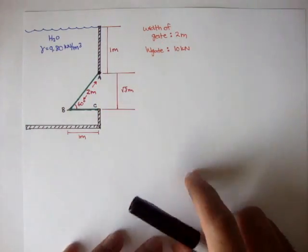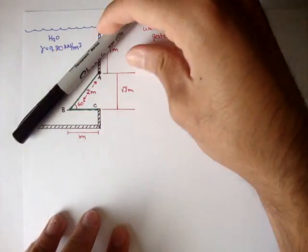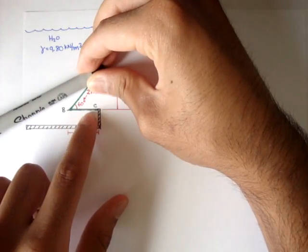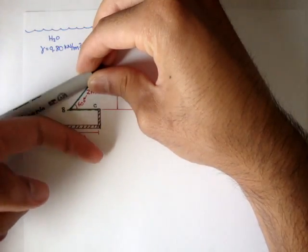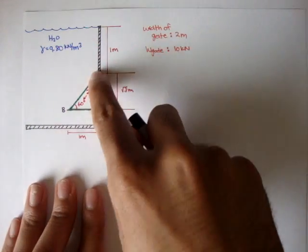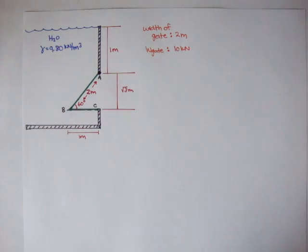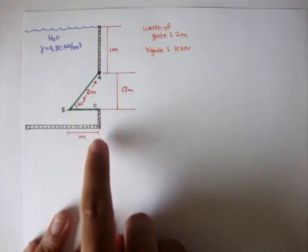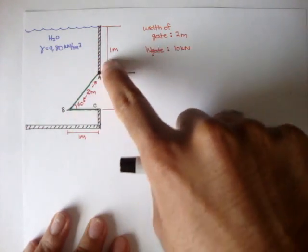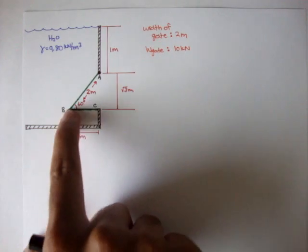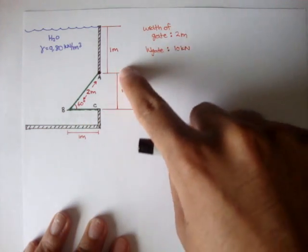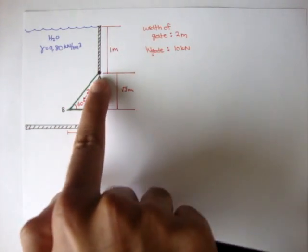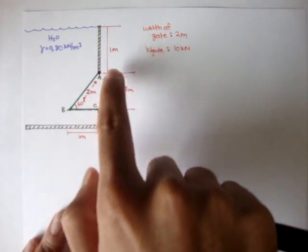We have a hinge at A, so the gate actually opens up like this. This little BC is attached here at B, so it's just this one big welded piece. The angle ABC is 60 degrees, and the length of the gate here is 2 meters. The length of the gate here is 1 meter. The height is square root 3 meters, and the distance from the water to the hinge at A, or the beginning of the gate, is 1 meter.